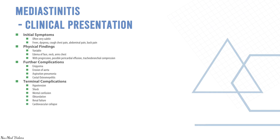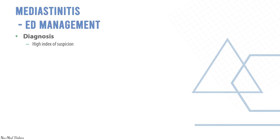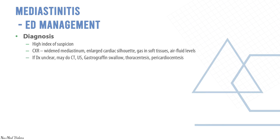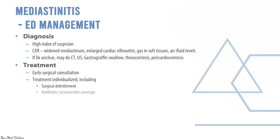Further complications include empyema, aortic erosions, aspiration pneumonia, costal osteomyelitis, and terminal complications such as septic shock, mental confusion, obtundation, renal failure, and cardiovascular collapse. Management requires a high index of suspicion. On chest X-ray look for widened mediastinum, enlarged cardiac silhouette, gas in soft tissues, and air-fluid levels. CT, ultrasound, Gastrografin swallow, thoracentesis, or pericardial synthesis may be used. Treatment involves early surgical consultation, debridement, antibiotics, and hemodynamic support.